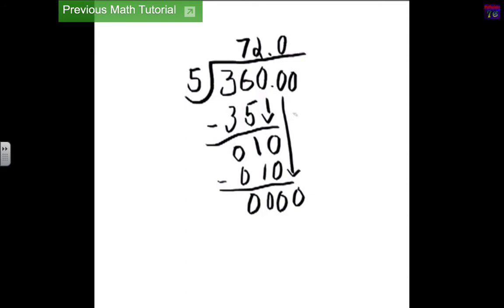So, now we have to bring down this 0. And 5 still can't go into 0, so we have to put another 0 up here to show that. So, really what this is saying is, each road would have 72 meters and 0 centimeters. Yeah, that's the length of each road. So, how you would read this is 72.00 meters. So, that means 72 meters and 0 centimeters.